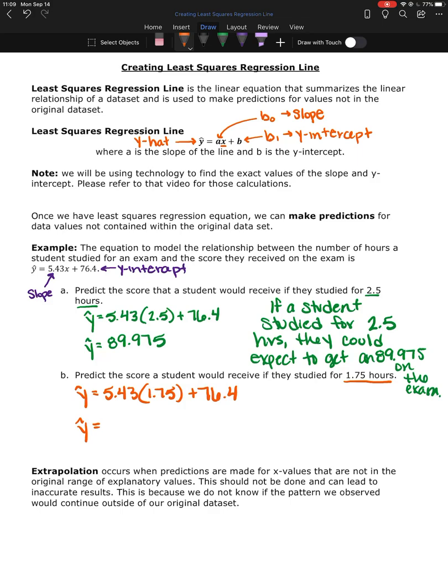So we do this again. We plug in 1.75. And now this student who studied for 1.75 hours, they're scoring an 85.9025 or an 85.9 on their exam.